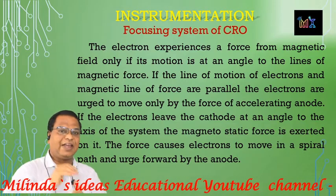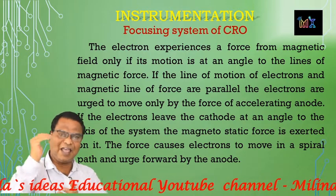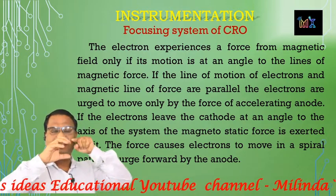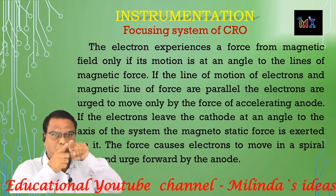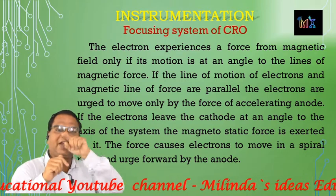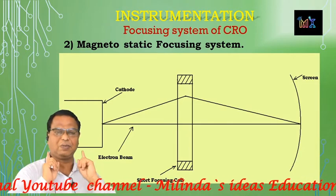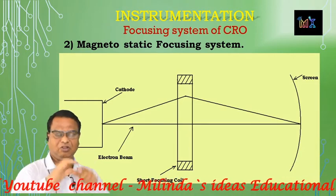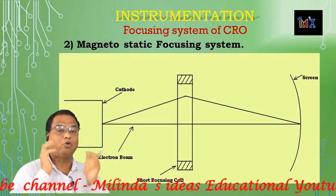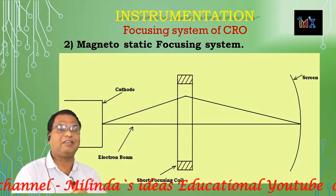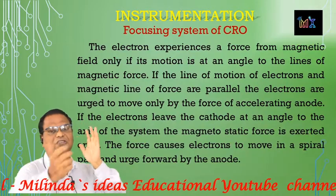The magnetic flux lines are parallel to the axis of the electron beam. The axial electrons are moving in a straight line from the cathode towards the screen. These axial electrons move parallel to the magnetic flux lines, so the force exerted on them by the magnetic field is negligible.